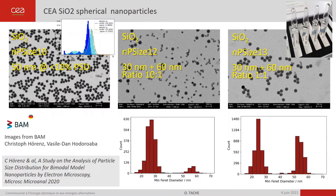NP size 10 has a diameter of 50 nanometers and very low polydispersity. NP size 12 and NP size 13 are mixtures of 30 and 60 nanometers from the same batch of particles, with two ratios: 9 to 1 and 1 to 1.